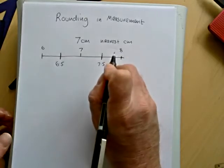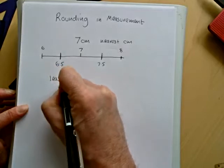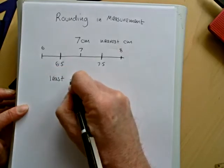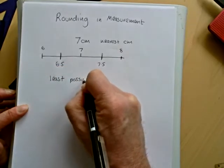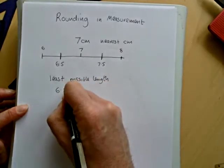So if we're asked the question, what's the least possible length of the leaf, least possible length, then we will say it's 6.5 centimeters.